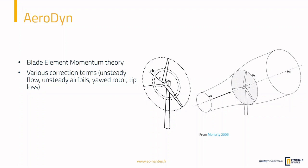To get the incoming wind speed we use the actuator disk theory. Basically, using Bernoulli's law, if you know the wind speed upwind from the turbine, you can get the wind speed on the rotor disk, and you can do that for each annulus of the rotor. In the end, you compute the loads on each section of the blade and sum all of them to get the total aerodynamic loads on the wind turbine. This is basically how AeroDyn works in its simplest form.